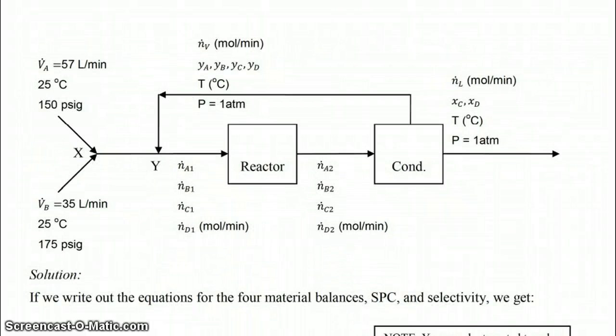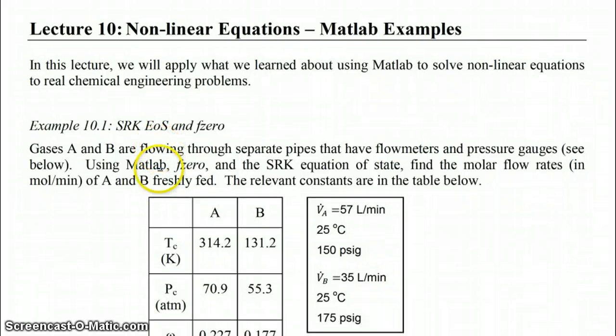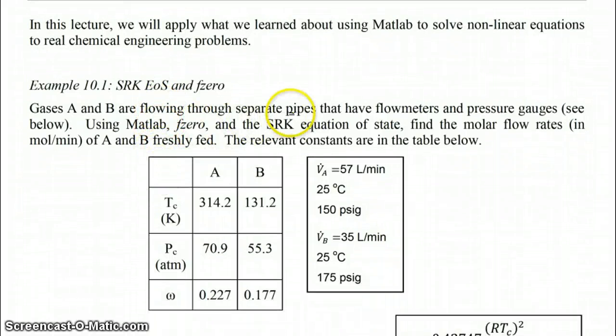To put things into context, we are looking at this bigger problem where you have gas A flowing through this pipe and gas B flowing through this pipe. They will eventually be mixed and sent to a reactor and condenser where you have a product stream and a recycle stream. These two pipes have flow meters and pressure gauges so we know those things, but we need to have molar flow rates in order to calculate other things about the problem. So we're going to use MATLAB, fzero, and the SRK equation of state in order to find the molar flow rates via finding the molar volumes of the two gases.